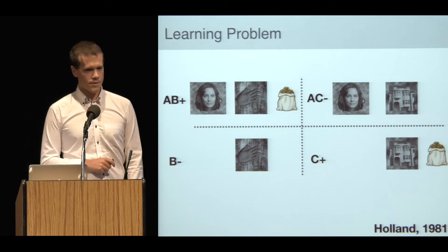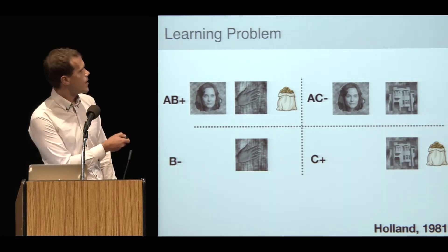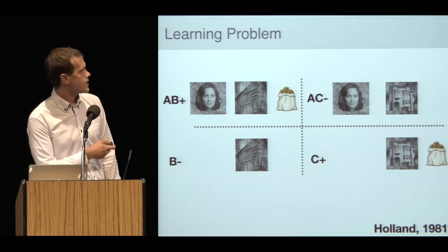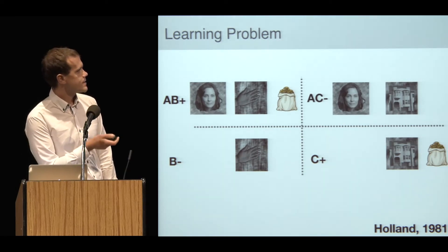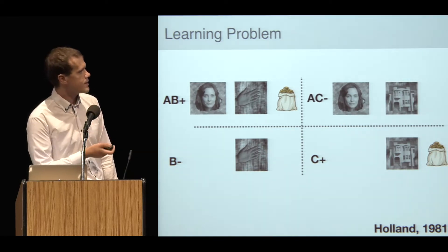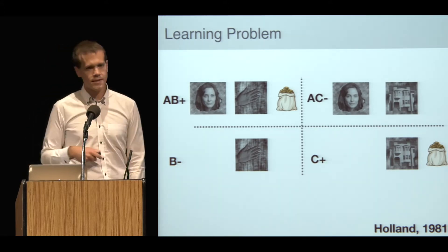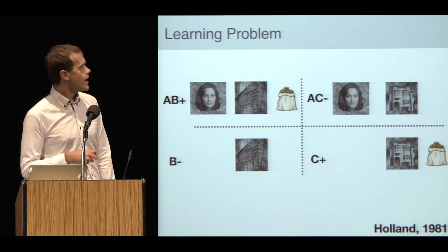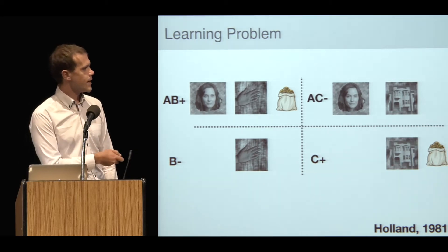The way I'm going to get at this is with a learning task that looks something like this. There are four contingencies that subjects need to learn: AB+, AC-, B-, and C+, where the pluses are associated with reward or some kind of outcome and the minuses aren't.